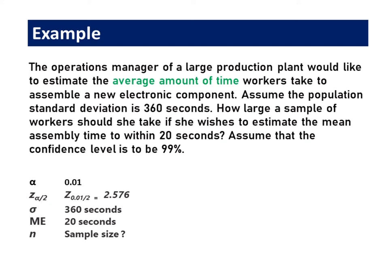How large a sample of workers should she take if she wishes to estimate the mean assembly time to within 20 seconds? Assume that the confidence level is to be 99%. The alpha value is 0.01. The z-value is 2.576. Population sigma is 360 seconds. Margin of error is 20 seconds.